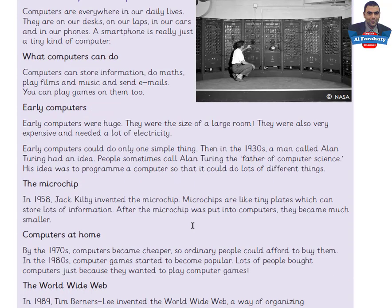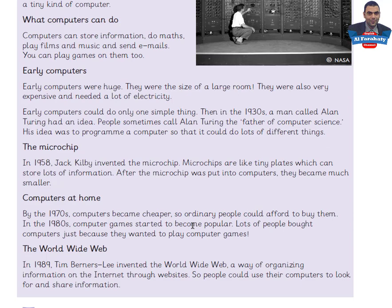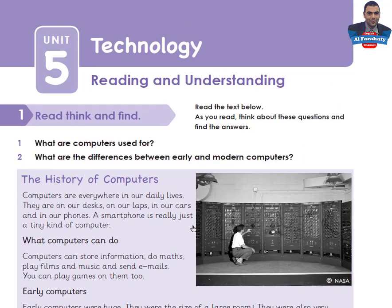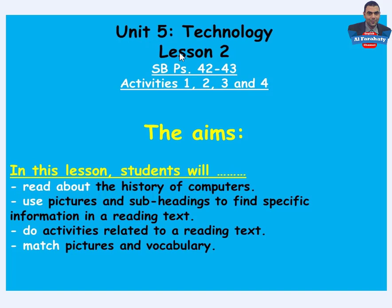What are the aims of this lesson? Let's check: Unit 5, Technology, Lesson 2, skills book pages 42 and 43, activities one, two, three, and four. The aims are: students will read about the history of computers, use pictures and subheadings to find specific information in a reading text, and do activities related to a reading text — matching pictures and vocabulary.